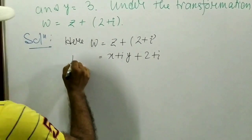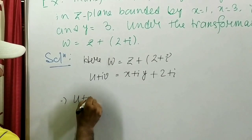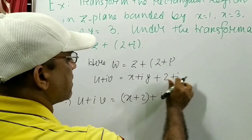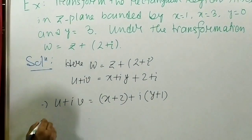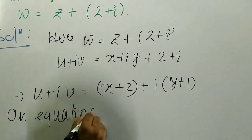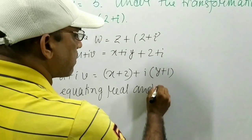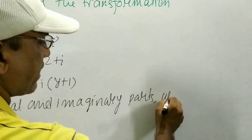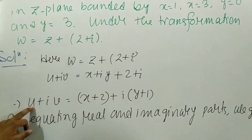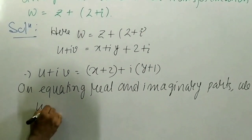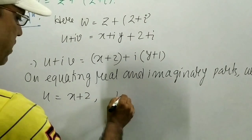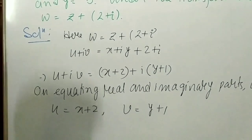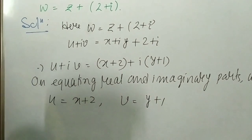Taking real and imaginary parts together: the real parts give u equals x plus 2, and the imaginary parts give v equals y plus 1. On equating real and imaginary parts, we get u equals x plus 2 and v equals y plus 1. Now we construct a table.